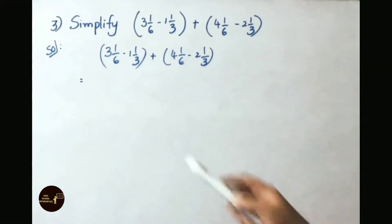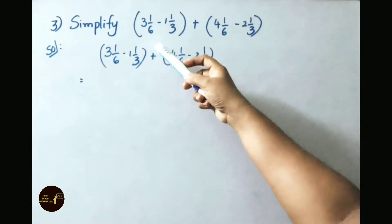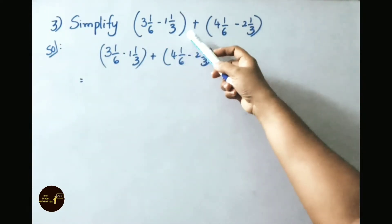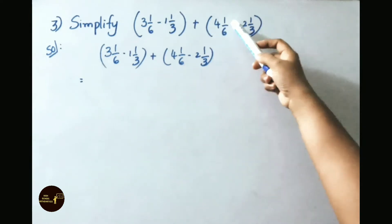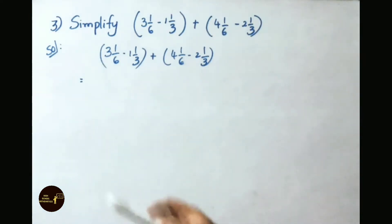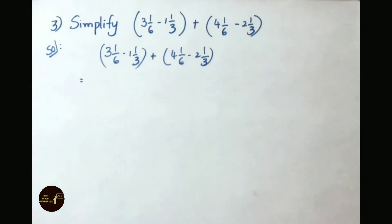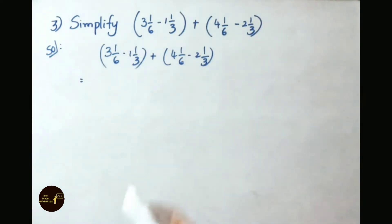See now the third question. Simplify: 3 and 1 by 6 minus 1 and 1 by 3 plus 4 and 1 by 6 minus 2 and 1 by 3. Let us see the solution now. First, we have to convert mixed fractions to improper fractions.